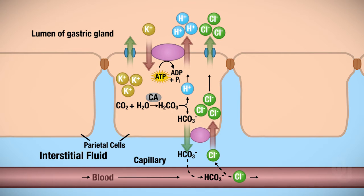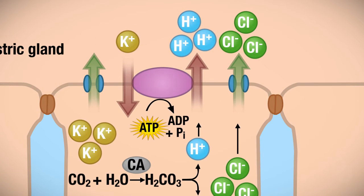Let's focus on the hydrogen ions first. Remember, the goal is to produce HCl in the lumen. The hydrogen ions are at a low concentration inside the cell, but at a high concentration in the lumen. Then we have potassium — potassium is at a low concentration in the lumen, but at a high concentration in the cytoplasm.